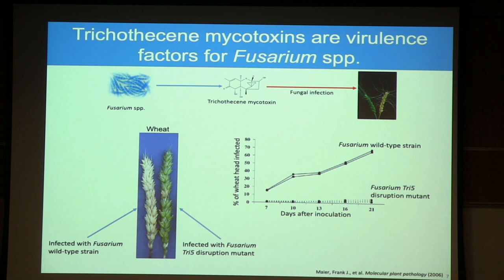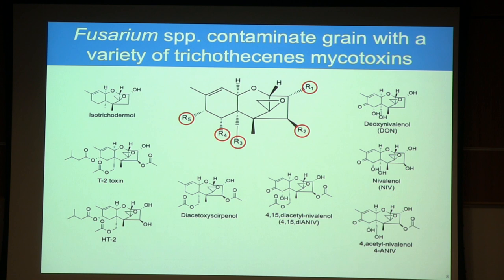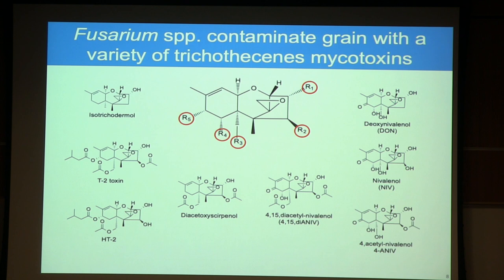Now I'll talk more about trichothecine mycotoxins. There are a vast number — over 150 have been characterized, and honestly there are probably many more. They are all characterized by a common trichothecine backbone, where enormous chemical diversity comes from different chemical groups on five R positions. These groups range from small hydroxyls as in nivalenol and deoxynivalenol, up to acetyl groups and larger groups like the isovaleryl group in T-2 and HT-2 toxin. I've included eight trichothecines on this slide that I'll be discussing throughout the presentation.